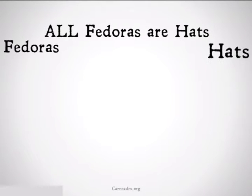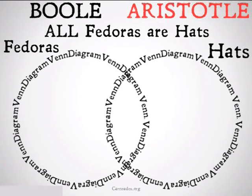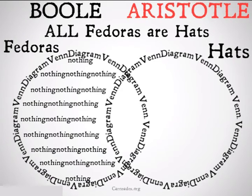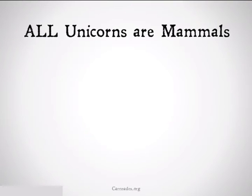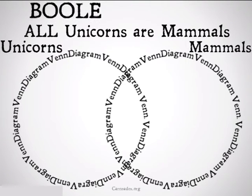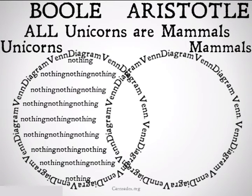All fedoras are hats. For Boole, we'd set it up as normal, just shading the fedora side. However, Aristotle would also put an X with a circle around it in the center. If our statement was all unicorns are mammals, they would both do it the same way because unicorns don't exist, so Aristotle wouldn't put that X in the middle.